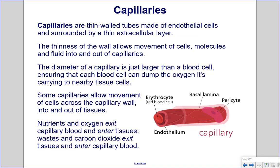Capillaries are thin-walled tubes made of endothelial cells surrounded by a thin extracellular layer. The thinness of the wall allows movement of cells, molecules, and fluid into and out of the capillaries. The diameter of a capillary is just larger than a blood cell, ensuring each blood cell can deliver oxygen to nearby tissue cells. Some capillaries allow movement of cells across the capillary wall into and out of tissues. Nutrients and oxygen exit capillary blood and enter the tissues, while waste and carbon dioxide exit tissues and enter capillary blood.